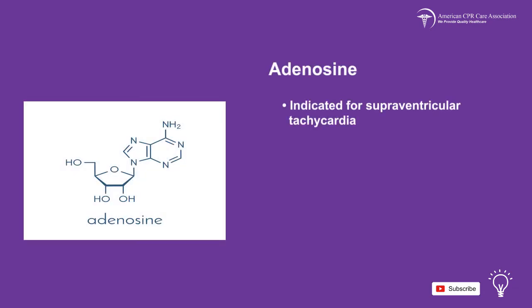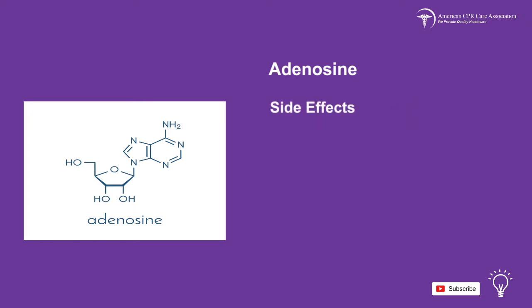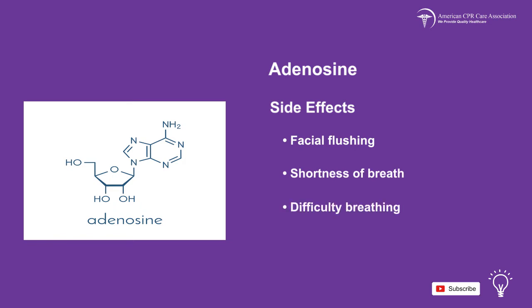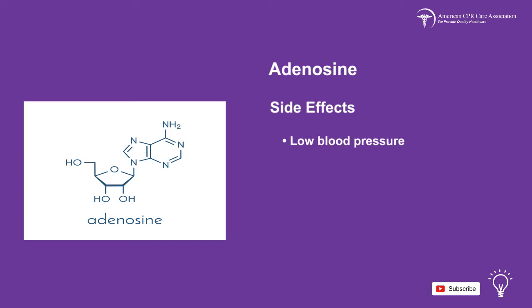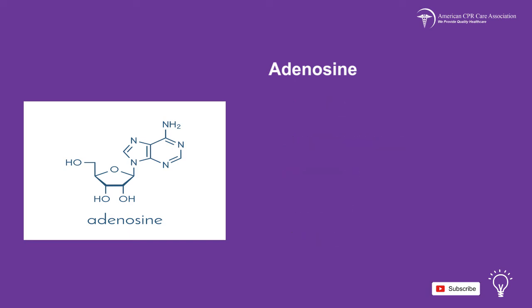Adenosine is indicated for supraventricular tachycardia. Side effects may include facial flushing, shortness of breath or difficulty breathing, lightheadedness, nausea, low blood pressure, palpitations, chest pain, or headaches.